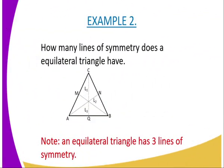On to the second example. How many lines of symmetry does an equilateral triangle have? You have triangle ABC, and in this case, it is an equilateral triangle, meaning that all sides are equal.